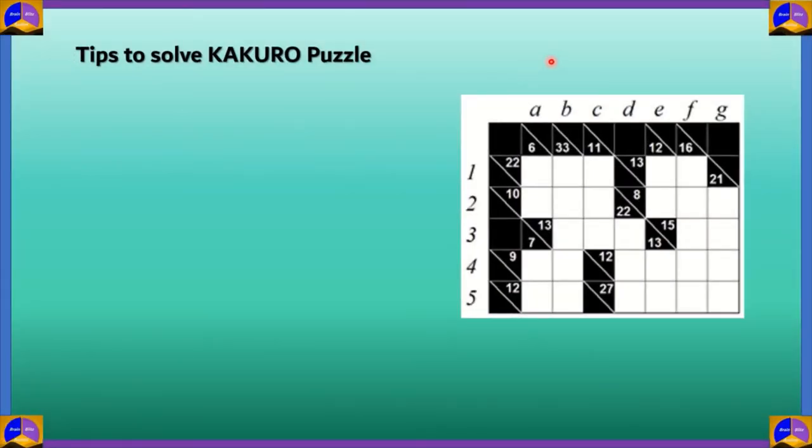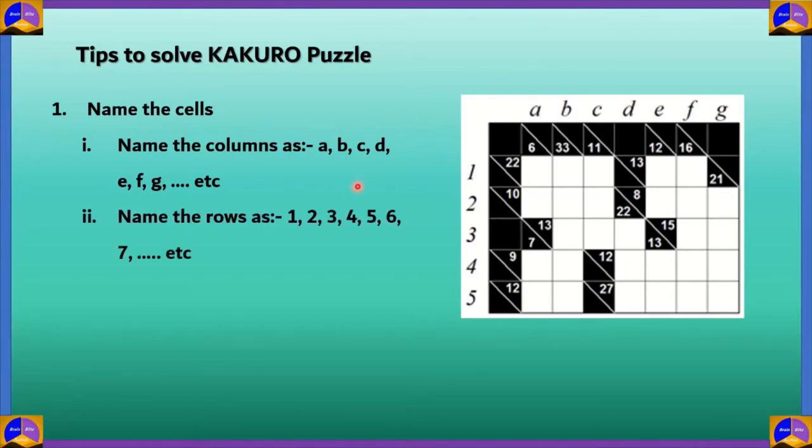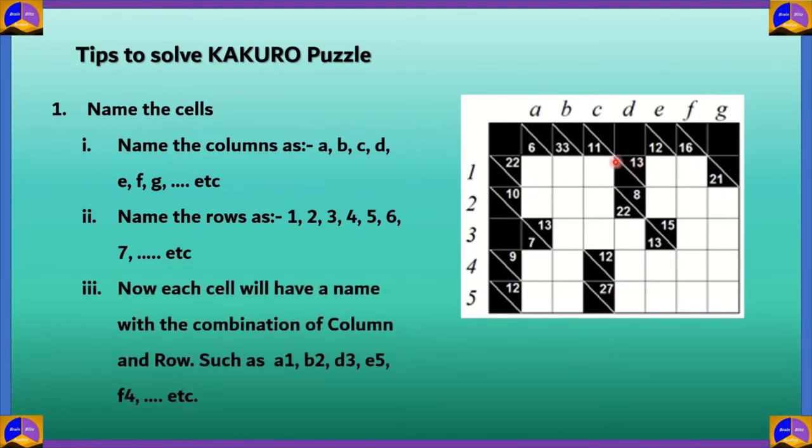Now that you know the basic rules of Kakuro, let's look at some tips that we can use to solve a Kakuro puzzle very easily. The very first tip is to name the cells. How do you name them? It's similar to how we name cells on Excel. Name the columns as A, B, C, D, etc. And name the rows as 1, 2, 3, 4, 5, 6, 7, etc. And each cell will now have a name with a combination of column and row, such as this one, which is A1.